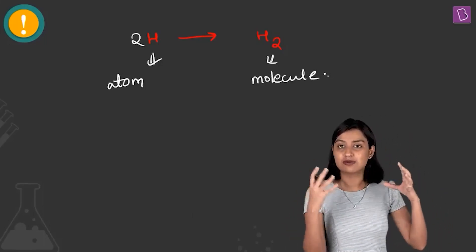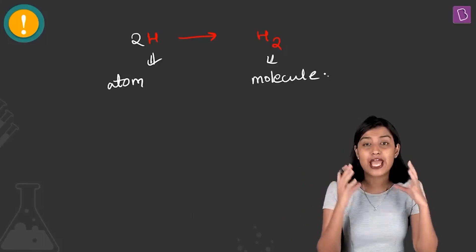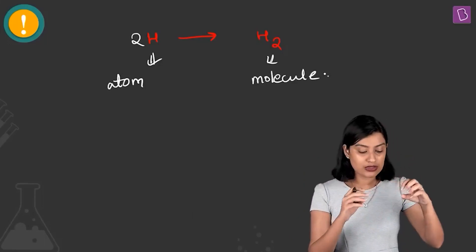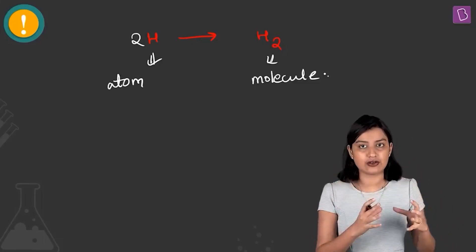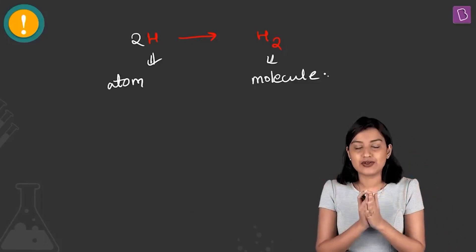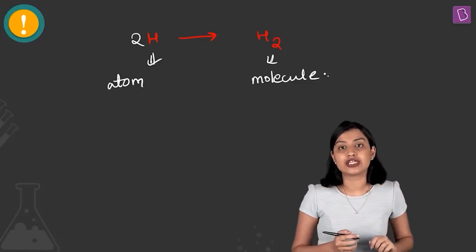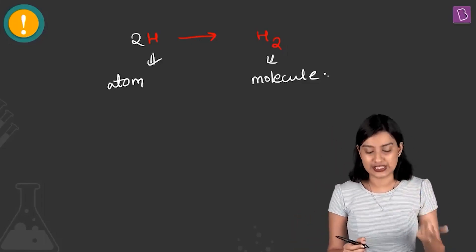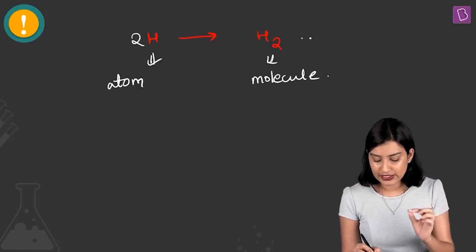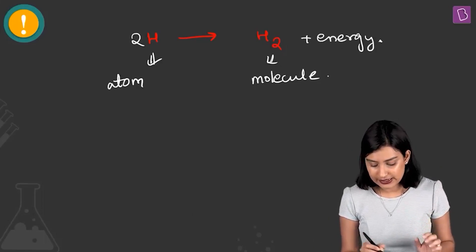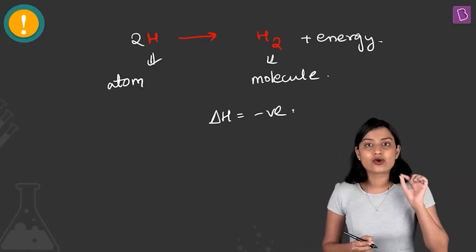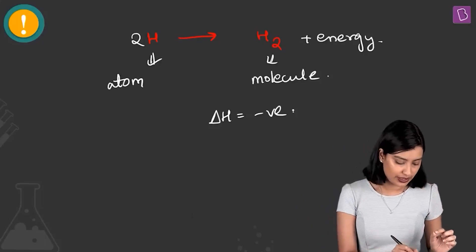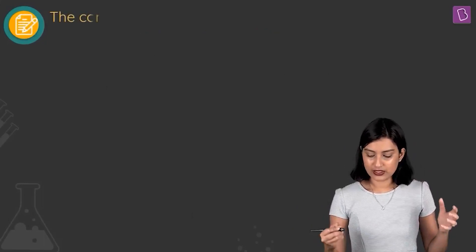In the molecule, bonding occurs, and because of bonding the system becomes more stable. The atomic hydrogens had very high energy; they combine to form a molecule and the energy in the process is lowered, which means energy is released. So you get H2 plus some energy — delta H for this process is negative, meaning this is an exothermic change.